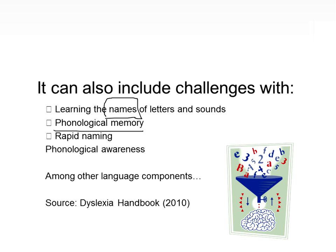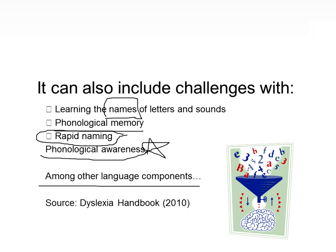Phonological memory — stretching out and saying sounds in a word — is key. Rapid naming is another challenge: if asked to name the days of the week, most people say Monday through Sunday quickly, but a student with dyslexia may struggle to retrieve and sequence that information rapidly. These are facets of dyslexia. Challenges with phonological awareness, along with spelling and language components, are among the key areas for identification. Reading the Dyslexia Handbook will help you learn more about these challenges.